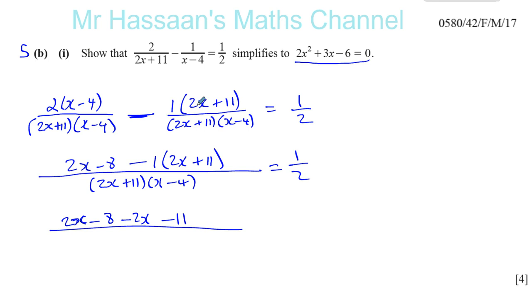Many people, they'll put minus 2x plus 11 because they don't put the 1 here and they'll just say straightaway minus 2x plus 11, but it's actually minus 2x minus 11. And you have 2x plus 11 and x minus 4 equals a half.